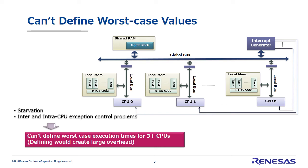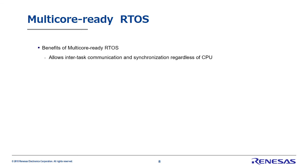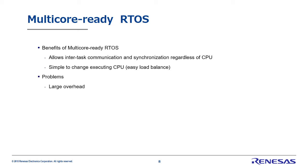Multi-core ready RTOS is extremely easy to use on AMP systems. But on the other hand, the overhead is much too large, and if there are three or more CPUs, there is a real problem with unpredictable worst case execution times. In summary, one benefit is that tasks running on different CPUs can use APIs for intertask communication and synchronization. Tasks running on one CPU can also be moved to another without significant architecture updates, making load distribution easy. In contrast, overhead is quite large due to the lock needed when accessing the management information, and in systems with three or more CPUs, worst case execution times can't be defined — or if software is structured to define them, the resulting overhead is huge.